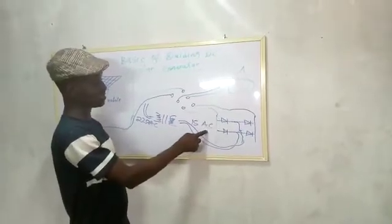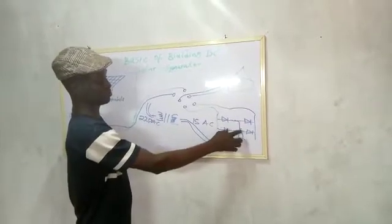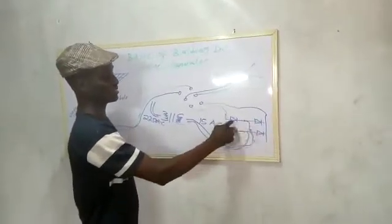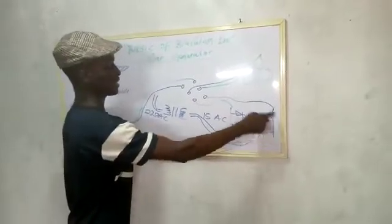Stepping down to 15 volt AC, it goes through this rectifier diode, it converts it to DC. And this is the DC positive, this is the DC negative.